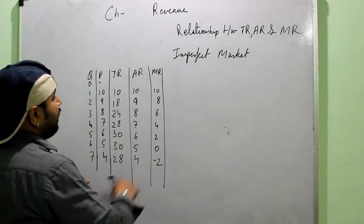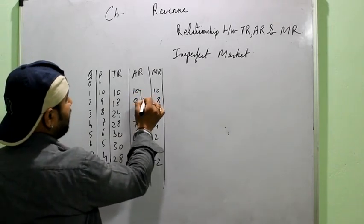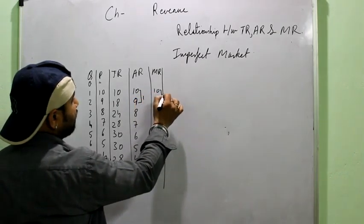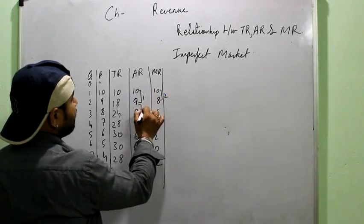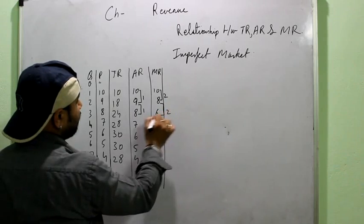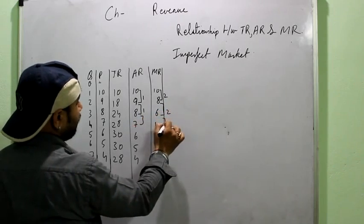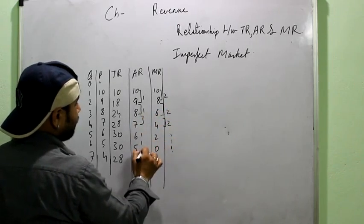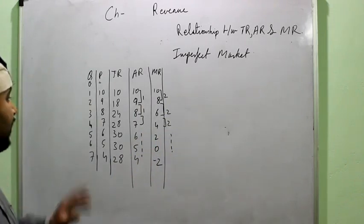Simply understand, see AR is decreasing by 1, MR is decreasing by 2. Again AR is decreasing by 1, MR will decrease by 2. Same. Right? The first thing that you observe.